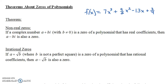In this video, we're going to look at a couple theorems about zeros of polynomials. These theorems are going to have to do with polynomials where the coefficients aren't too messy — coefficients that are what are called rational numbers.